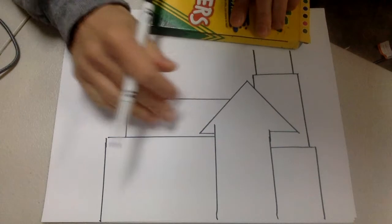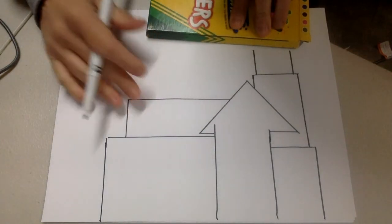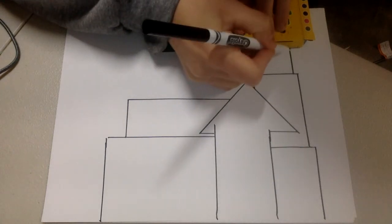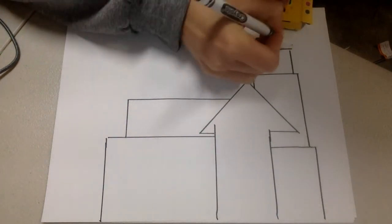We will worry about value later. Value, how light or dark a color is, we got to first get through this and then we'll worry about the value.